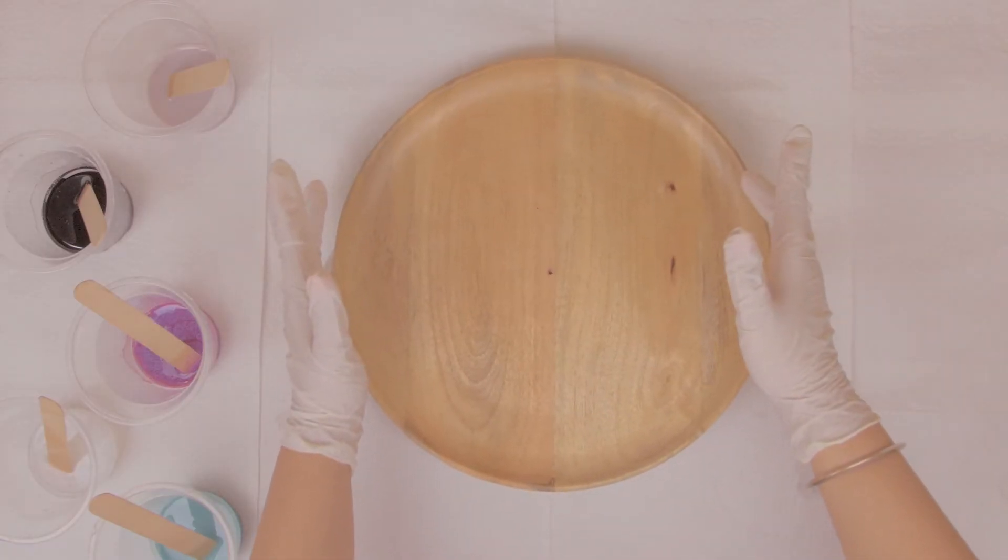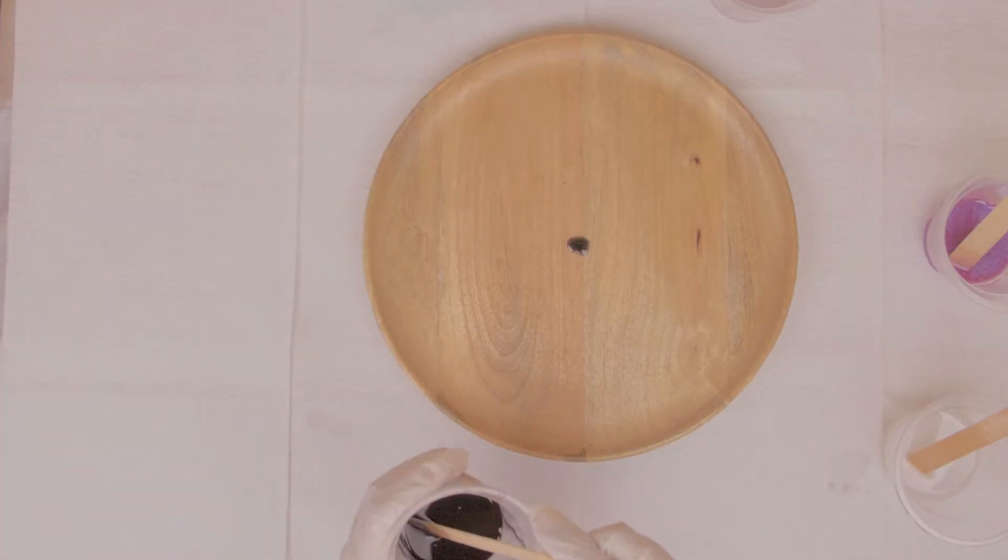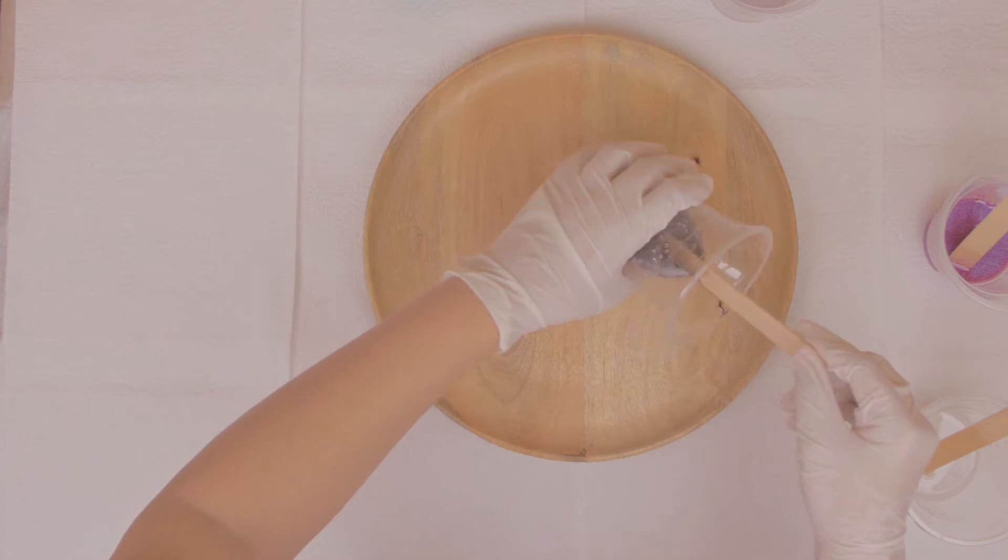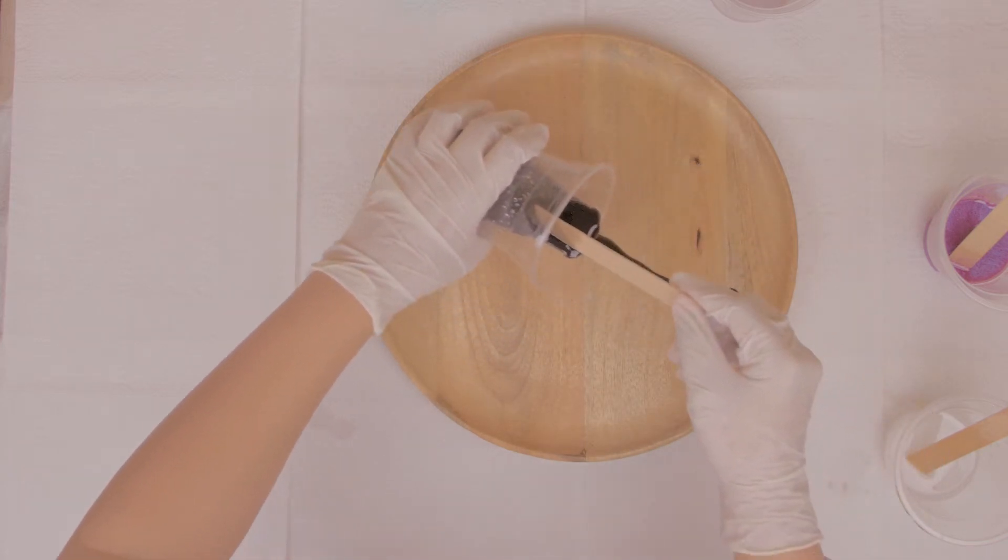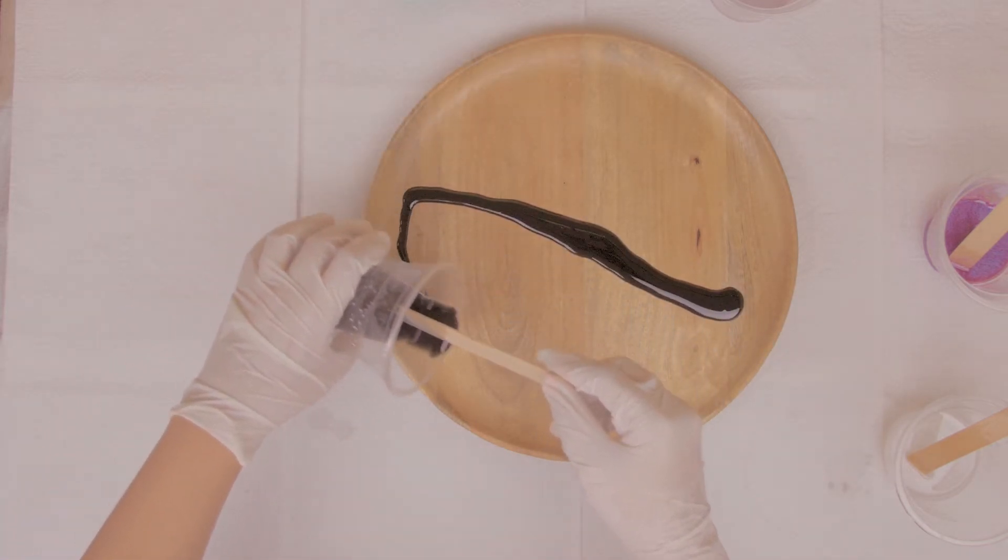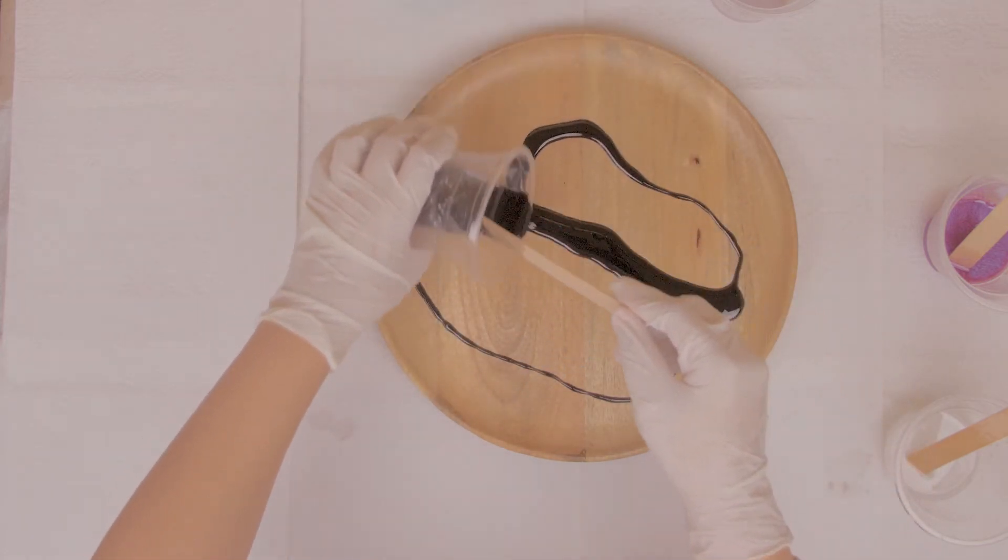So here I have this wooden plate and I'm going to pour the resin in the most satisfying way possible because it looks satisfying as hell. But you gotta do it fast because there is a specific amount of work time with resin, and after some time it starts to set, usually it's like 20 to 30 minutes.